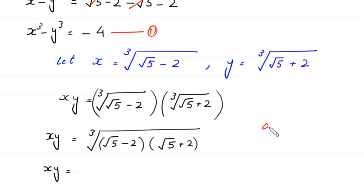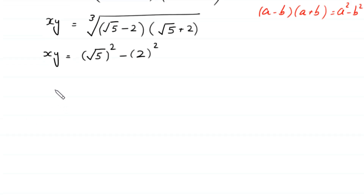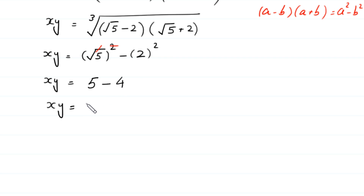According to this algebraic identity, a minus b times a plus b equals a squared minus b squared. So xy equals cube root of 5 minus 4. The square cancels with the square root, leaving 5 minus 4, which equals 1. So xy equals 1. We name this equation 2.